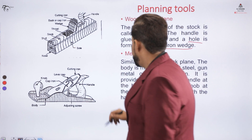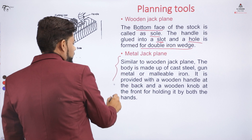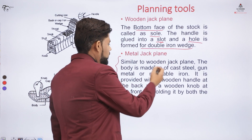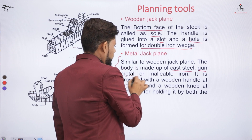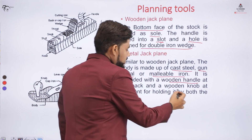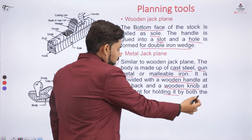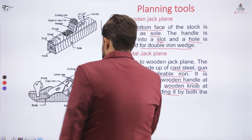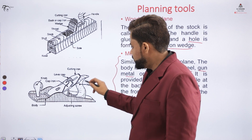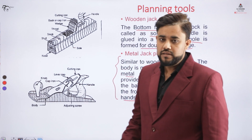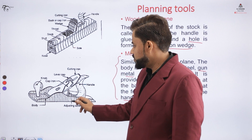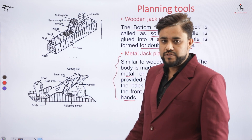If the material of the instrument is metal, it is called a metal jack plane. This instrument is similar to the wooden jack plane, but the material is cast iron, gun metal, or malleable iron. It is provided with a wooden handle and a wooden knob in the front for holding with both hands. It has a handle, a knob, a body, and an adjusting screw. In the bottom part there is a blade used to shave the surface of the wood.